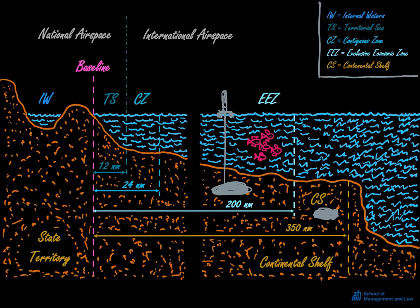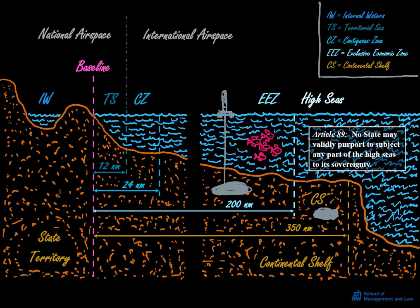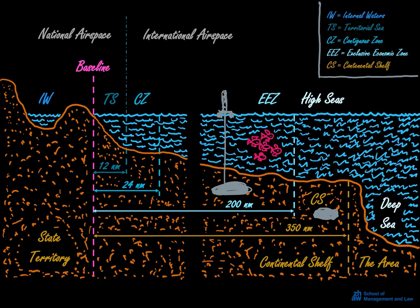Moreover, the maximum extension of continental shelf rights is 350 nautical miles from the baseline. And beyond the EEZ, the continental shelf rights of the coastal state are also restricted to the exploitation of mineral resources in the subsoil. The ocean waters above the continental shelf are part of the high seas, where no exclusive rights to fisheries can be claimed. Here, Article 89 of the UN Convention applies, according to which no state may validly purport to subject any part of the high seas to its sovereignty. The deep seabed that is beyond the reach of the rights of coastal states is what is called the Area — with a capital A — in the International Law of the Sea.